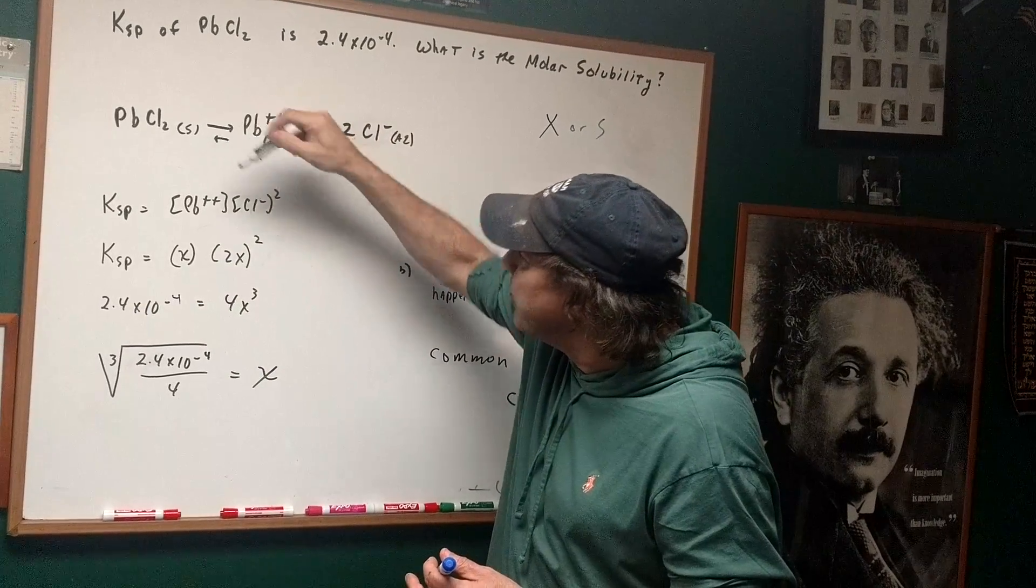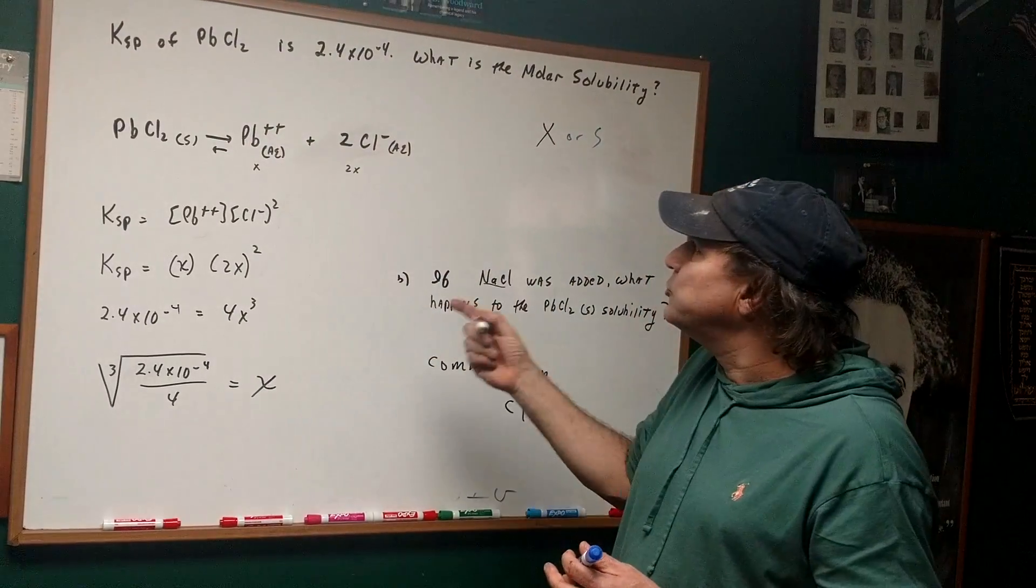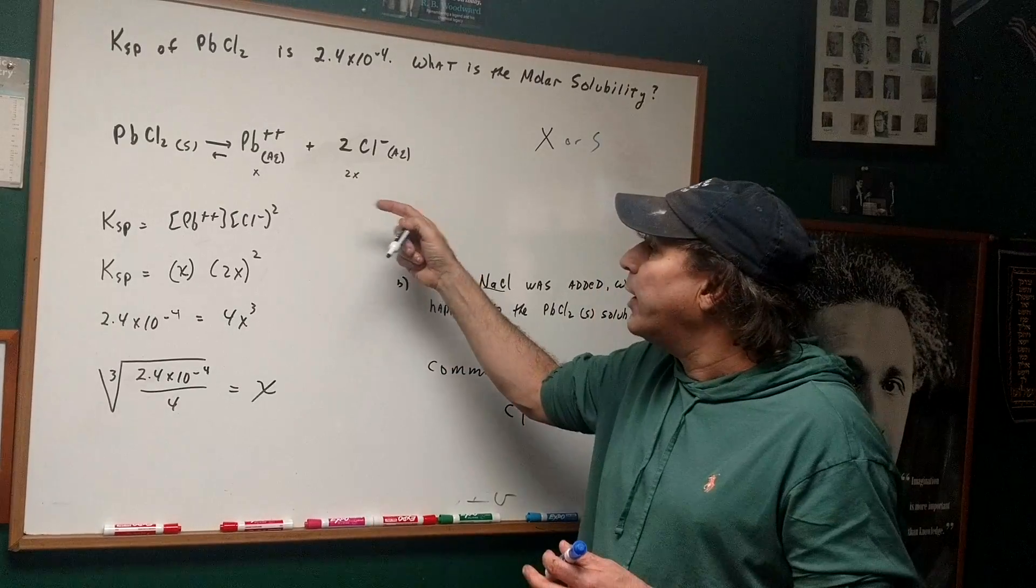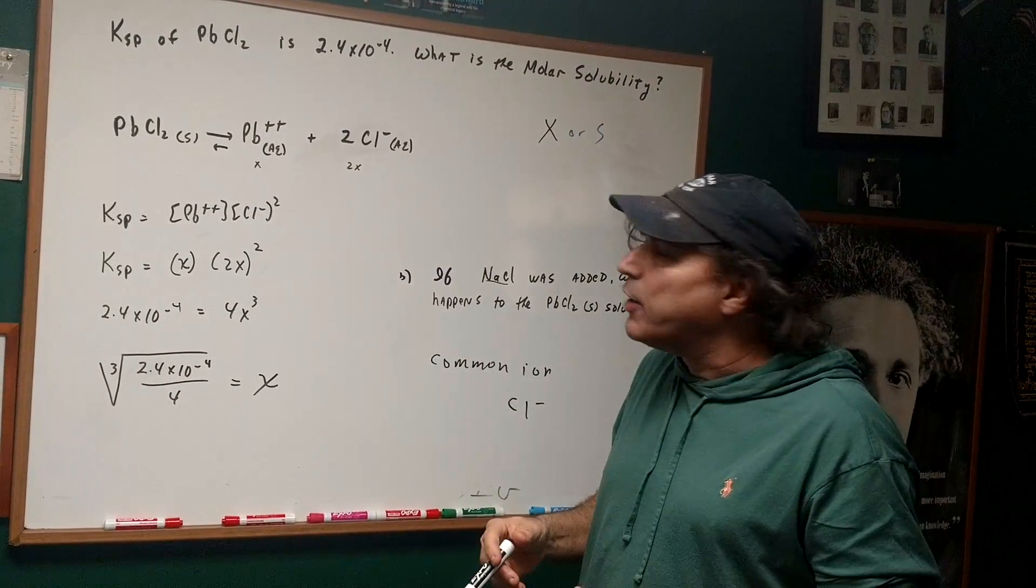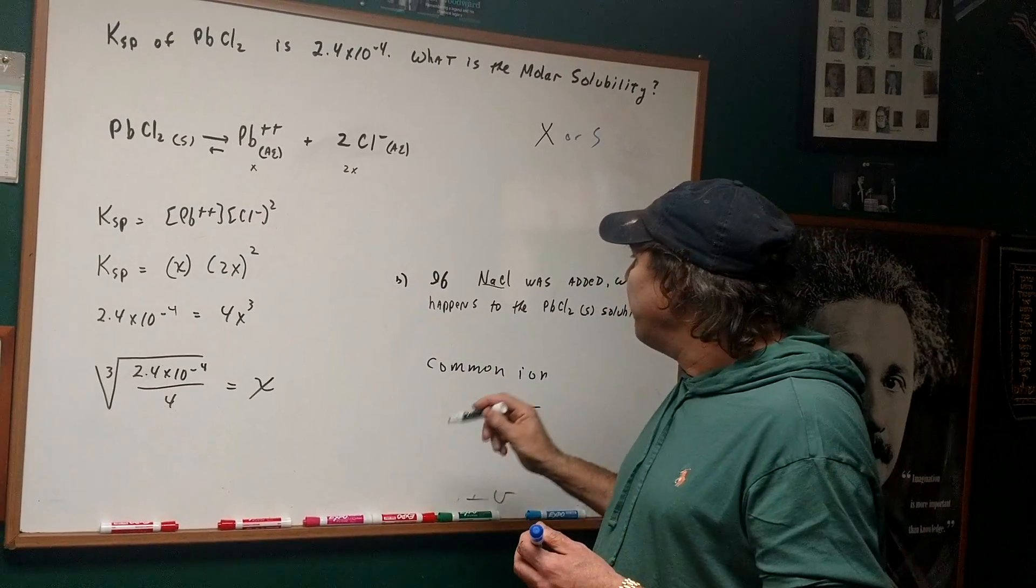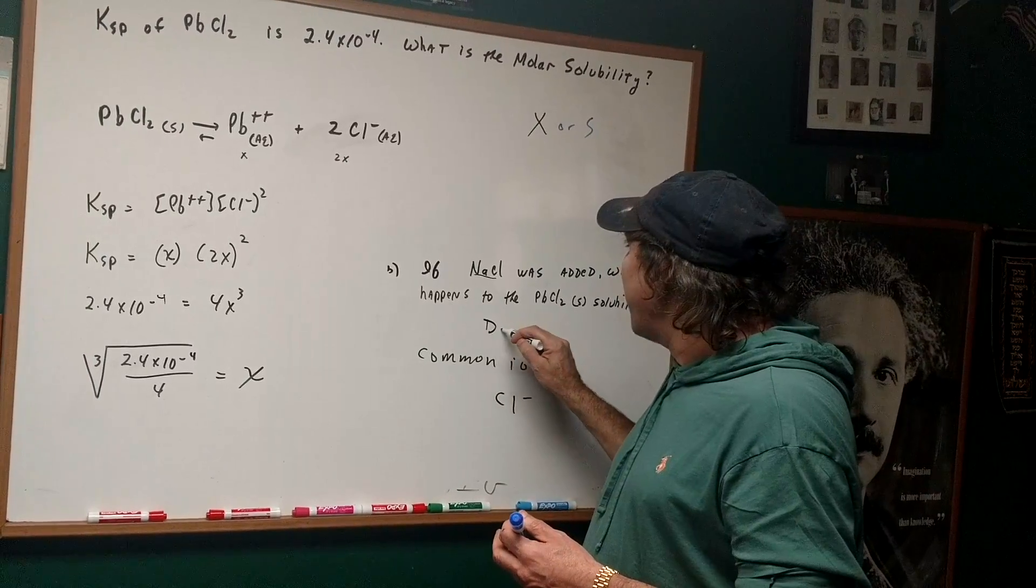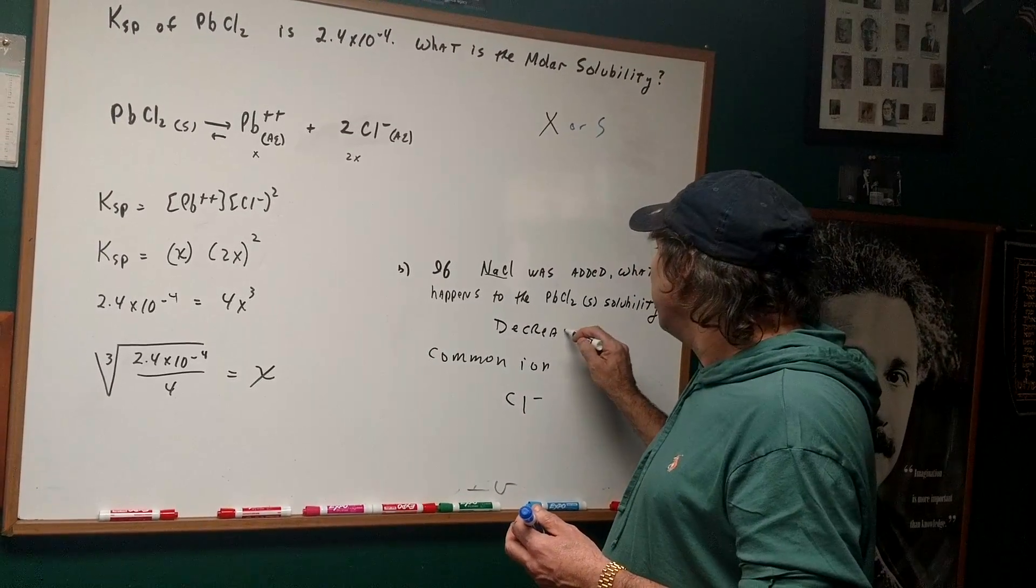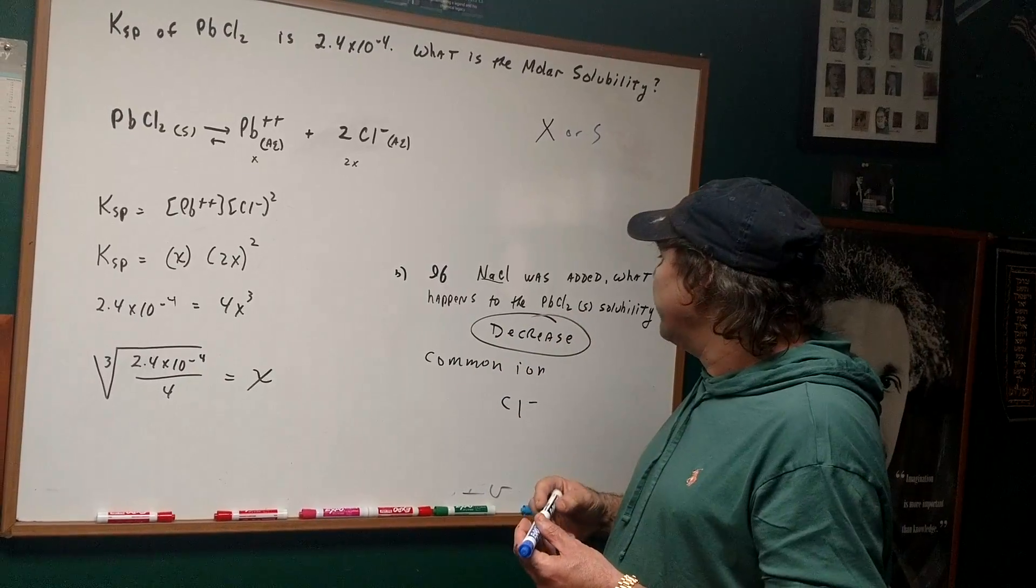Therefore, some of the reaction goes to the left, since you're adding a common ion, and that means you're making more of the solid. If you're making more of the solid, the solubility—it becomes less soluble. So the solubility would decrease.